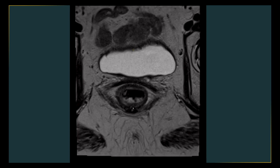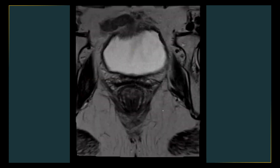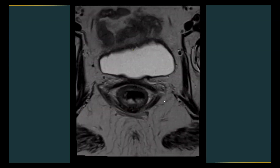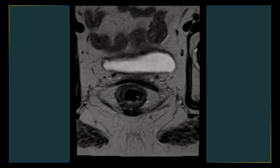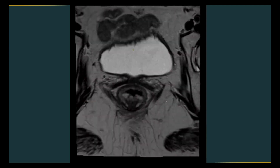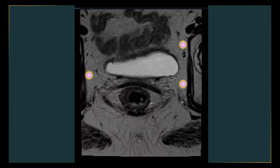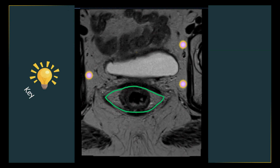The reason these lymph nodes are described separately is that they are outside the traditional plane of total mesorectal excision. We need to specifically mention in our reports if there are pathological pelvic sidewall lymph nodes so that surgeons know there is disease outside the mesorectal fascia and may need to extend their surgery along the pelvic sidewall, and radiation oncologists know they need to give localized radiotherapy to these lymph nodes.